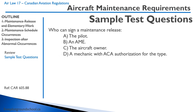Who can sign a maintenance release? A) The pilot. B) An AME. C) The aircraft owner. D) An aircraft mechanic with ACA authorization for type. Remember, it is the owner's responsibility for maintenance, but it is the AME that actually does the maintenance and signs the release. The correct answer is B.